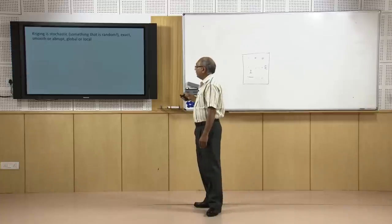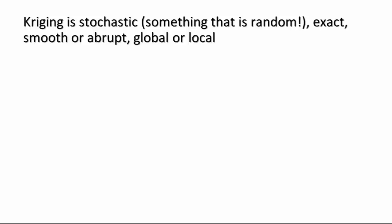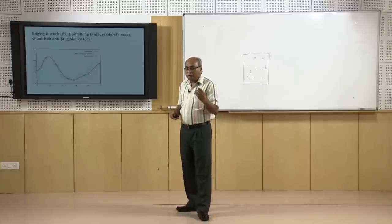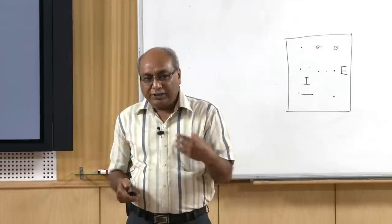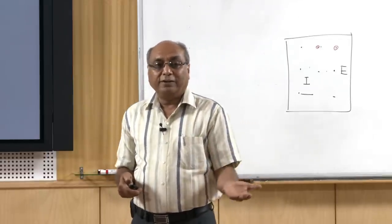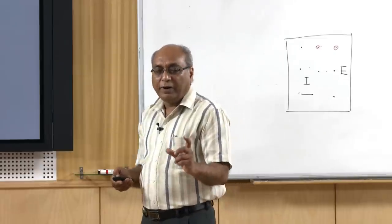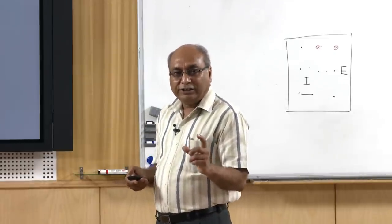Kriging is stochastic, exact, smooth or abrupt, global or local. In a 2D linear representation, blue boxes show observations and the interpolated Kriging surface is shown in red, with 95% confidence intervals on both sides. The advantage of Kriging is that you can also estimate errors after interpolation, which is not available with other methods. Kriging is found to be one of the best interpolation techniques, though it still depends on the phenomenon and terrain conditions.